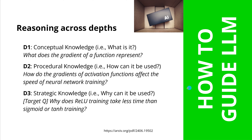They started simple. They said they want to have three complexity layers — to reason across different DAPT levels. First, we have D1, the concept knowledge. For example: what does the gradient of a function represent? Then D2 is procedural knowledge — like how do the gradients of activation functions affect the speed of neural network training? And then D3, our strategic knowledge: why does ReLU training take less time than sigmoid or tanh training?